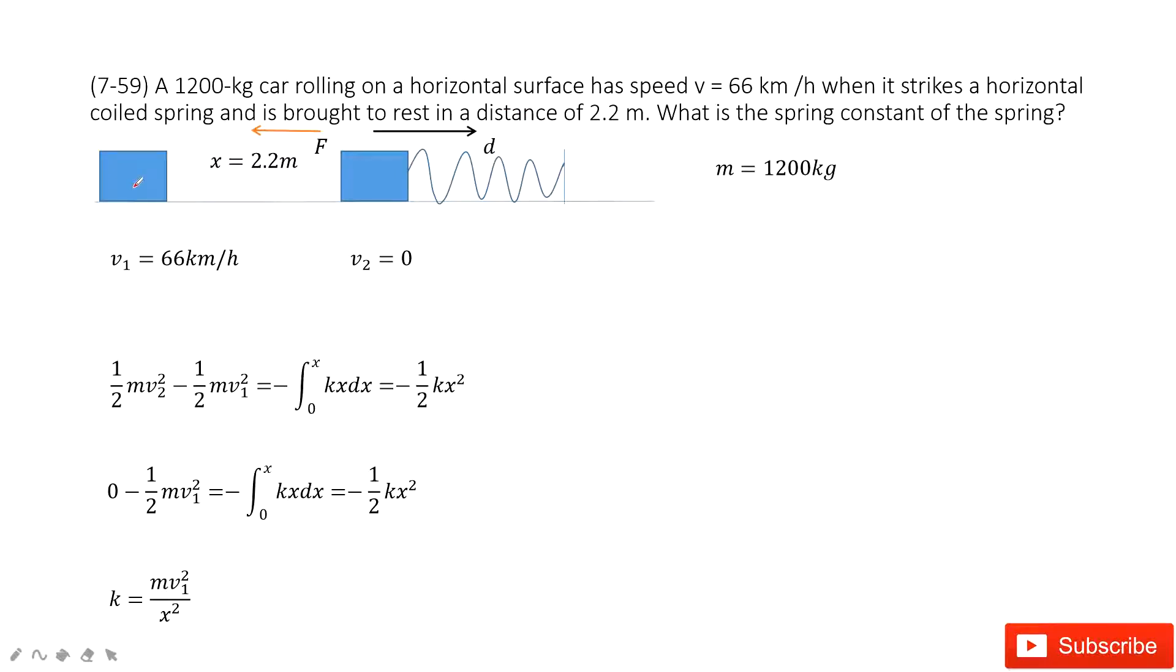First, we have a car. The object's mass is given, and we know the initial velocity. This car hits the spring and finally stops. The v2 becomes zero—it remains stationary.